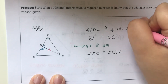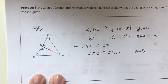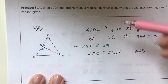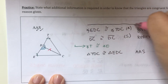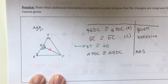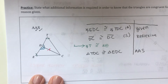If you don't like this format, you could just draw the lines to make it into a two-column proof. Hopefully this video helps with angle, angle, side. I'll see you guys in the next video.